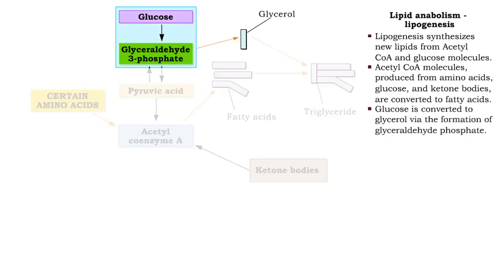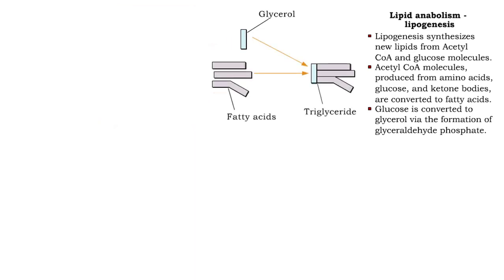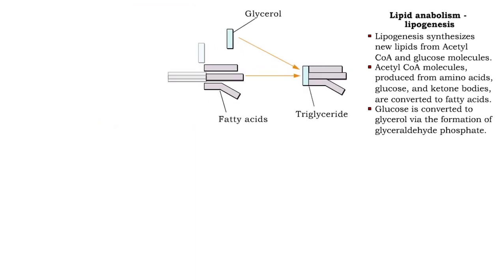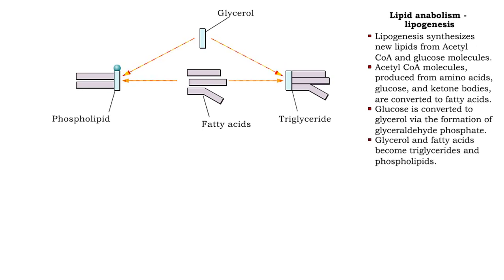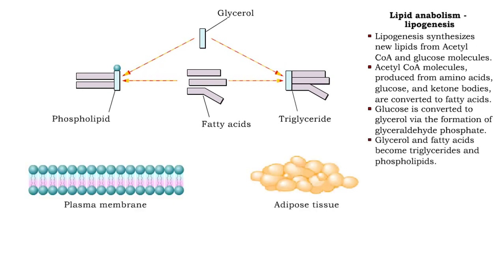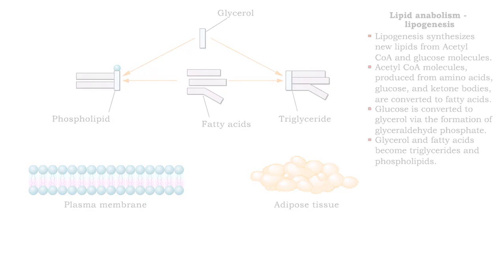Through the formation of glyceraldehyde phosphate, glucose is converted to glycerol. Then, through a series of anabolic reactions, glycerol and fatty acids become triglycerides and phospholipids.